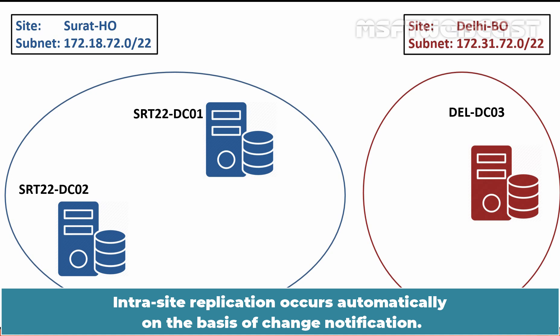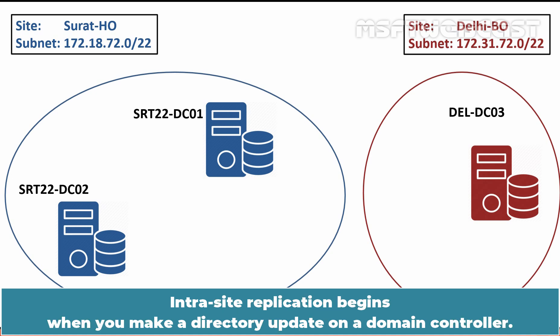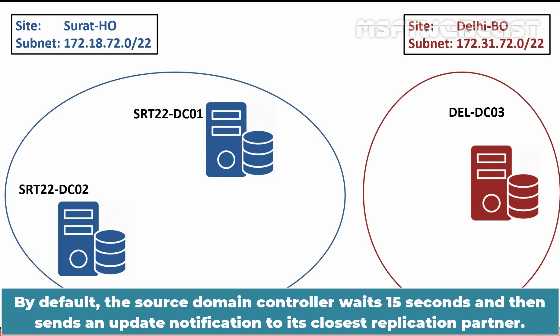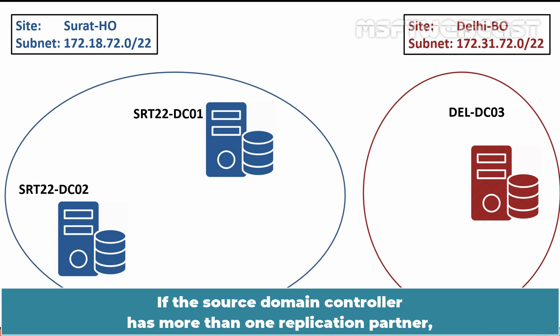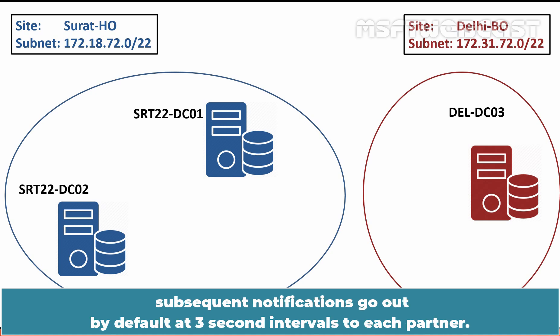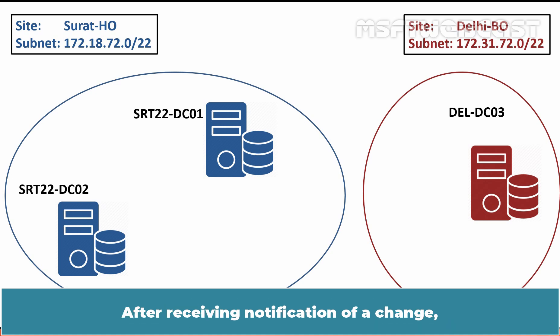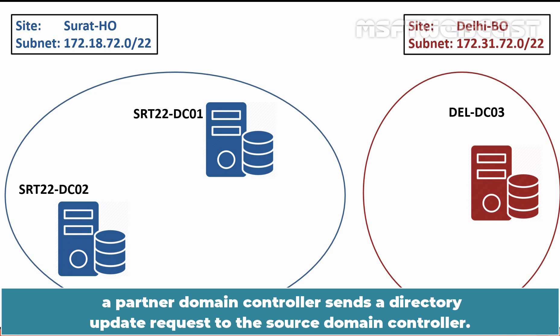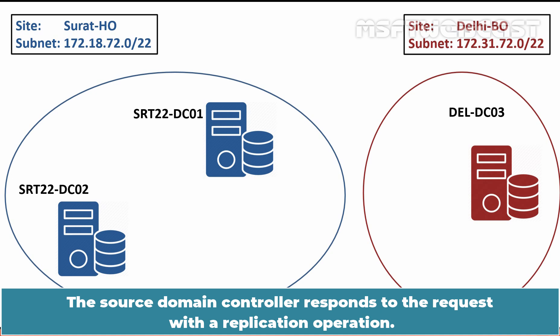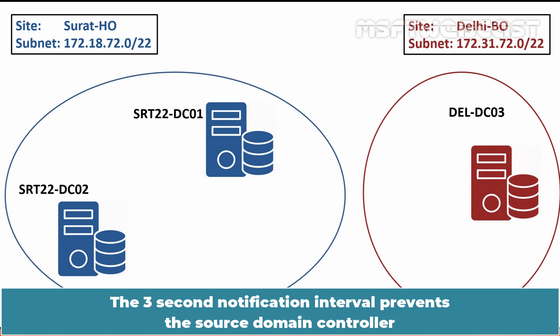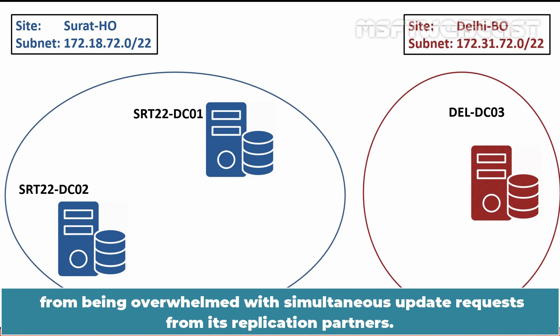Intrasite Replication occurs automatically on the basis of change notification. It begins when you make a directory update on a domain controller. By default, the source domain controller waits 15 seconds and then sends an update notification to its closest replication partner. If the source domain controller has more than one replication partner, subsequent notifications go out by default at three-second intervals to each partner. After receiving notification of a change, a partner domain controller sends a directory update request to the source domain controller, which responds with a replication operation. The three-second notification interval prevents the source domain controller from being overwhelmed with simultaneous update requests from its replication partners.